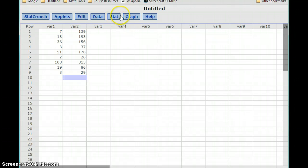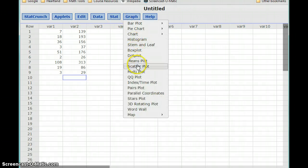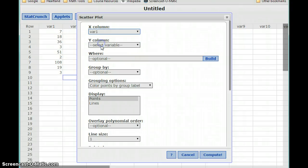So with our data in StatCrunch, we can select Graph and construct a scatter plot. Select our two variables.